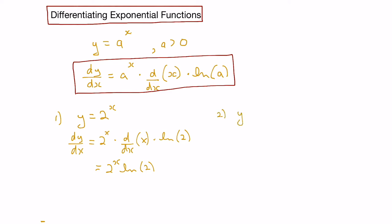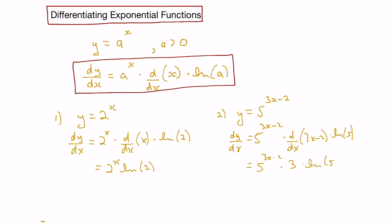Let's say we wanted to find the derivative of 5 to the 3x minus 2. Applying the formula, the derivative would be the function itself times the derivative of the exponent times the natural logarithm of the base. The derivative of 3x minus 2 is 3, so it would be multiplied by 3 times the natural logarithm of 5. You can clean it up and write it as 3 ln 5 times 5 to the 3x minus 2. Normally we don't evaluate ln 5 or ln 2 — we just leave it in that form.